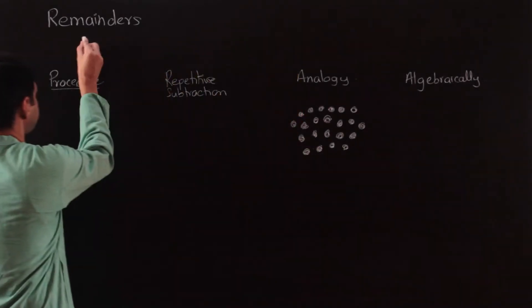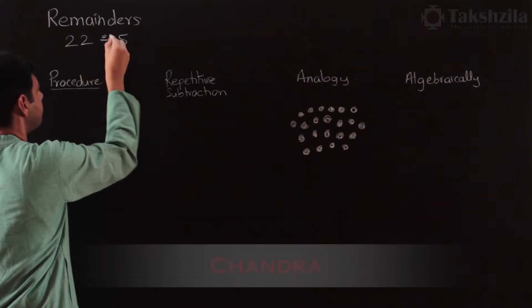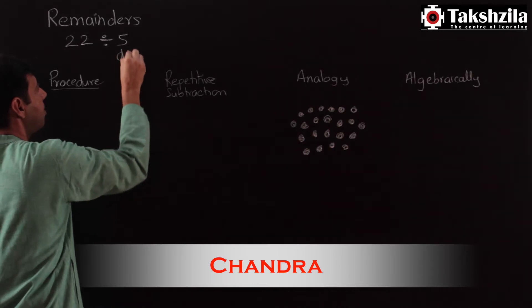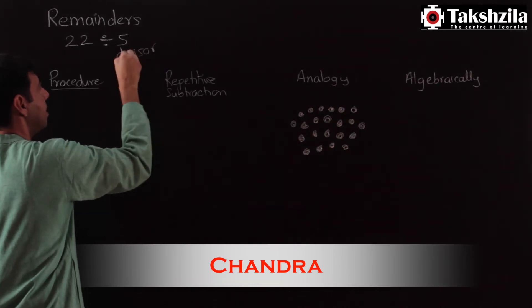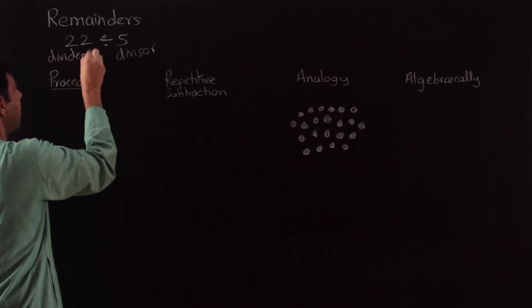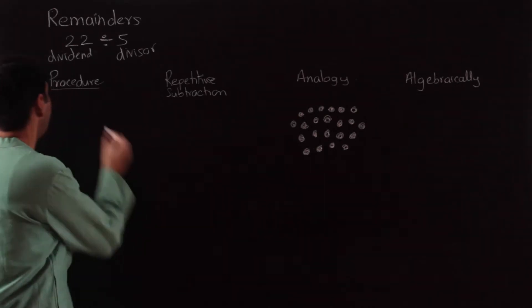Consider the division 22 divided by 5. Here we are dividing by 5, which is called the divisor, and 22 is your dividend. You won't use the word dividend as much, but divisor quite a bit.